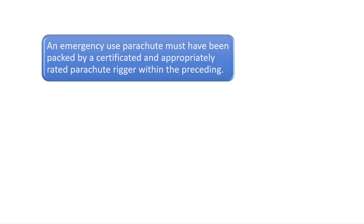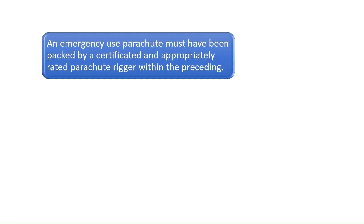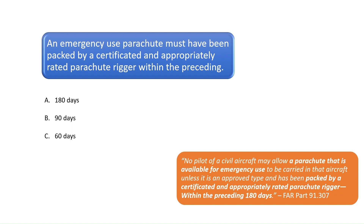Question 9: A parachute must have been packed by a certificated and appropriately rated parachute rigger within the preceding? According to FAR Part 91.307, an emergency use parachute must have been packed by a certificated and appropriately rated parachute rigger within the preceding 180 days. Note that the parachute must have been packed within the preceding 60 days if the parachute is composed of silk. The regulations are a bit unclear, but FAA study material confirms the best answer is 180 days. This question used to refer to chair-type parachutes, but the FAA recently changed the regulations to say emergency use parachutes. The correct answer is A.